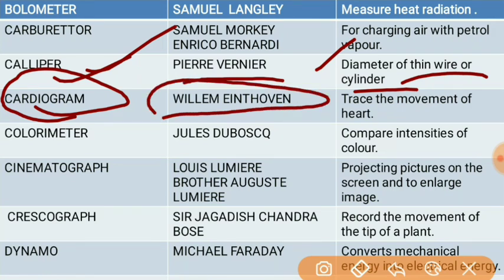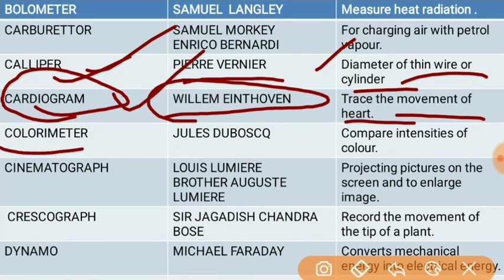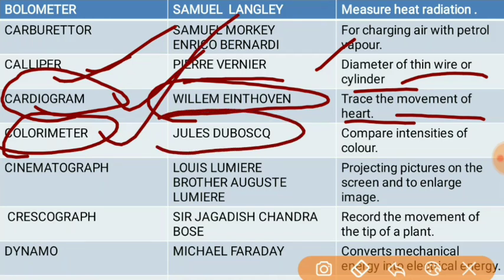The cardiogram is another important instrument. The cardiogram was invented by William Einthoven. The cardiogram is used to trace the movement of the heart. This is a very important instrument.